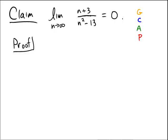Okay, for this problem, we have a claim that the limit as n goes towards infinity of n plus 3 over n squared minus 13 is equal to 0.